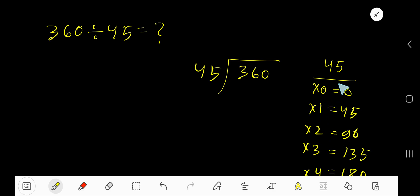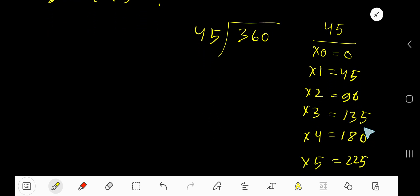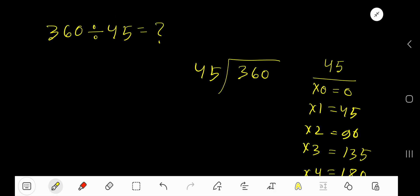To find out the multiplication table of 45, just add 45 with the previous step. 0 plus 45 is 45, 45 plus 45 is 90, 90 plus 45 is 135, 135 plus 45 is 180. This process will continue.